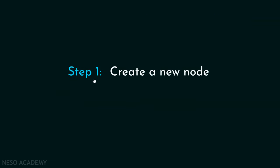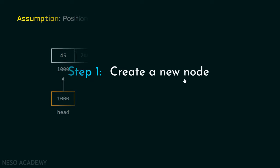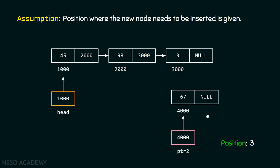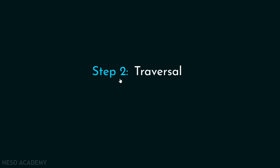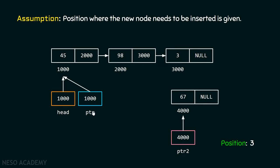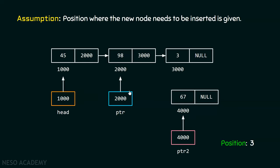For this purpose, the first step is to create a new node. Then step two is to traverse the list. For this, I have created this pointer PTR, which will do the job of traversing the list. We will move our pointer to the second position of the list — just before the position where we want to insert our new node. So the pointer will move just one position forward.